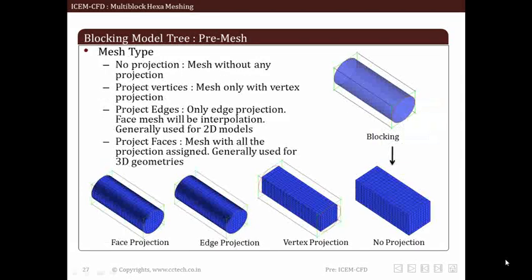Under pre-mesh, we have different preview mesh options available. By enabling no projection, we can preview mesh without any projection. By enabling project vertices, we can preview mesh with vertex projection. Vertices on edges of blocks will be projected to curves or surfaces to which they are associated. By enabling project edges, we can preview mesh with only edge projection. Nodes on edges of blocks will be projected to curves or surfaces to which they are associated. Face mesh will be interpolated. This option is generally used for 2D models.